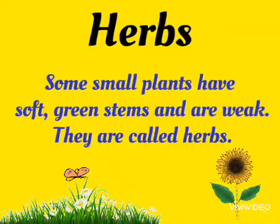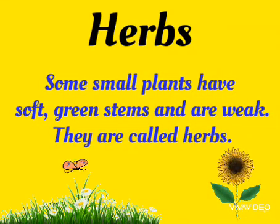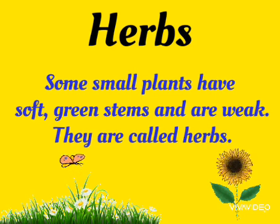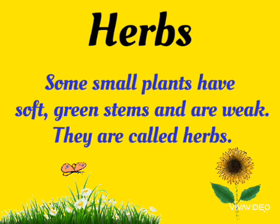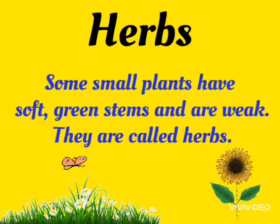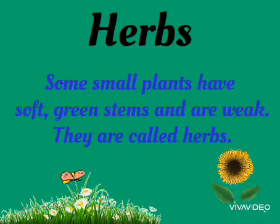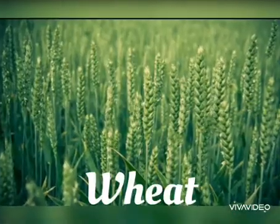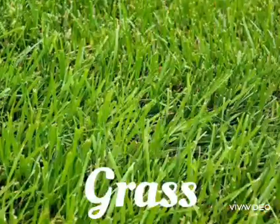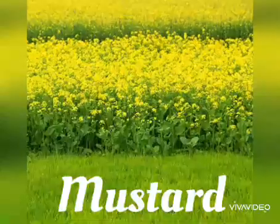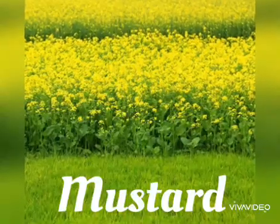Now, herbs. Some small plants have soft green stems and are weak. They are called herbs. For example, wheat, sunflower, grass, mustard, etc.